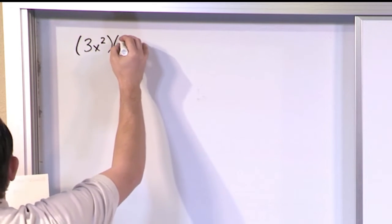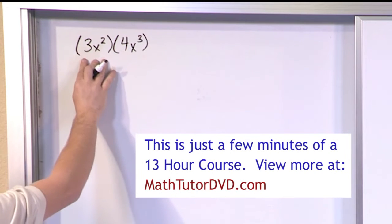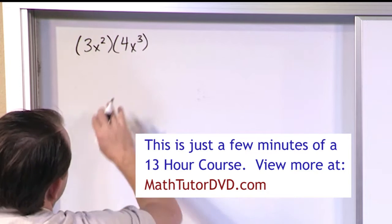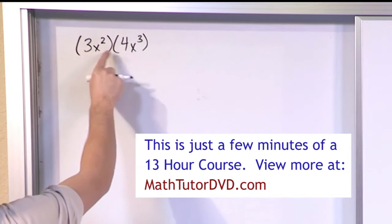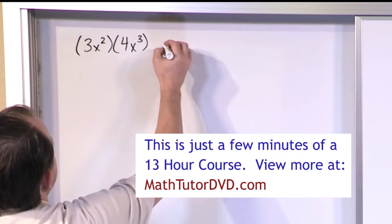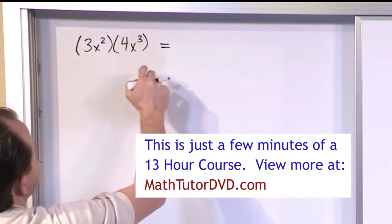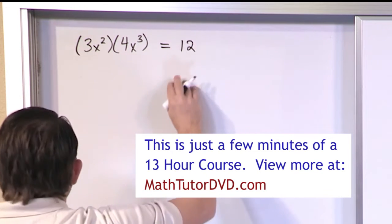3x² times 4x³. Now I'm saying this is a polynomial here multiplying by this polynomial here but of course these are each one term so they're very small little insignificant polynomials but they're being multiplied together. So what do you do here? When you have things multiplied together like this, first thing you do is multiply the numbers. 3 times 4 is 12.